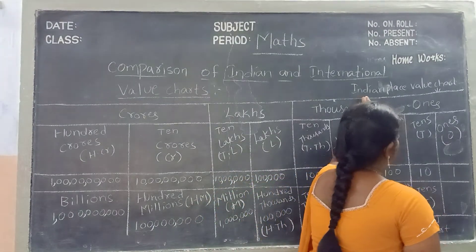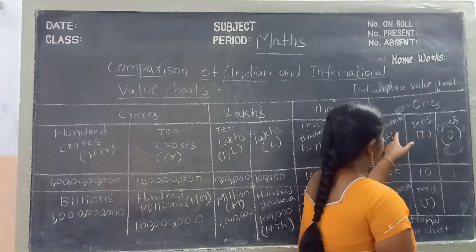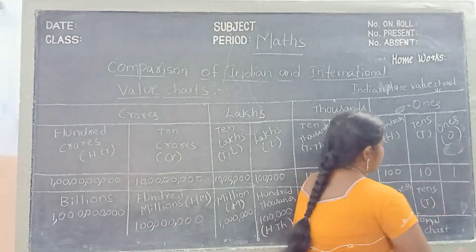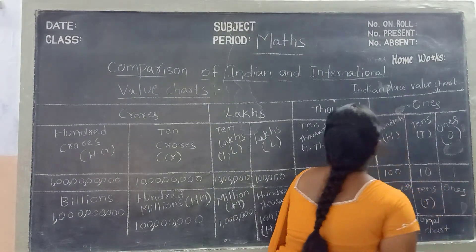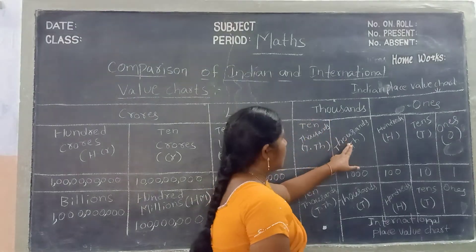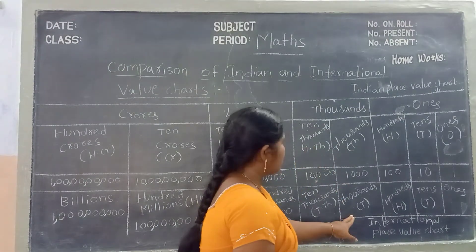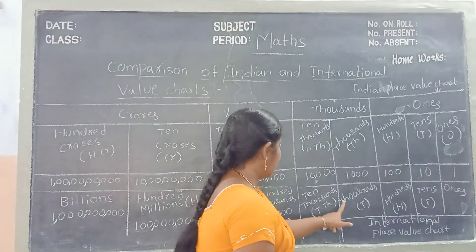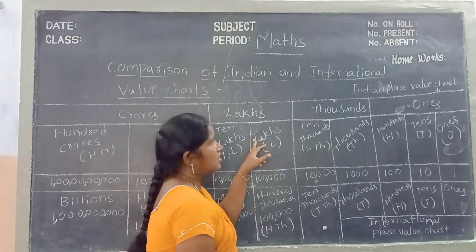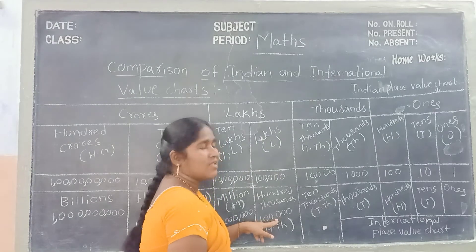See children, in the Indian place value chart we have in the ones period: ones, tens, hundreds. And next one goes to the thousands period. In the Indian place value chart, thousands period has thousands and ten-thousands. In the international place value chart, thousands period has thousands, ten-thousands, and hundred-thousands. Means in the Indian place value chart we have lakhs, whereas in the international place value chart that one is hundred-thousands.